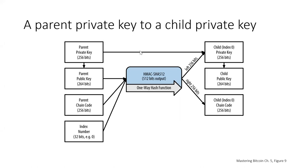To go from a parent private key to a child private key: the parent private key is used to generate the parent public key. Combined with the parent chain code and an index number indicating which child to create (child zero, one, two, etc.), these are fed into HMAC-SHA-512. The 512-bit output gives 256 bits as input for creating the child private key and 256 bits for the child chain code. Once the child private key is created, the child public key can then be derived.